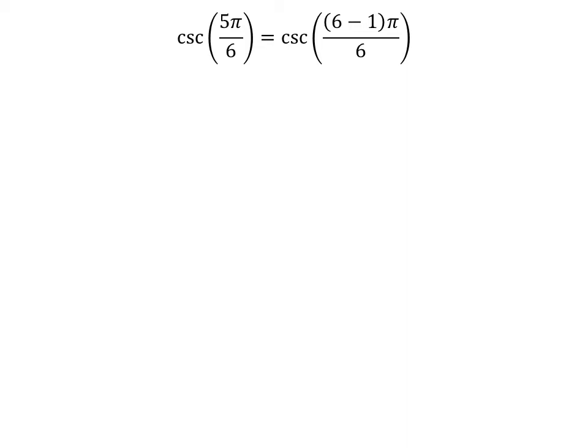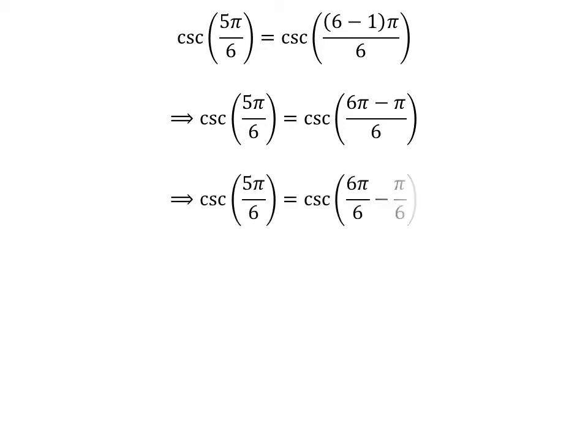We know 6 minus 1 is equal to 5. So cosecant of 5 times pi upon 6 is equal to cosecant of 6 minus 1 times pi upon 6. Expanding the numerator, we get cosecant of 5 times pi upon 6 is equal to cosecant of 6 times pi minus pi upon 6. The fraction 5 times pi upon 6 can be expressed as the difference of two fractions: 6 times pi upon 6 and pi upon 6. Cancelling out the common factor in the numerator and the denominator gives us cosecant of 5 times pi upon 6 is equal to cosecant of pi minus pi upon 6.